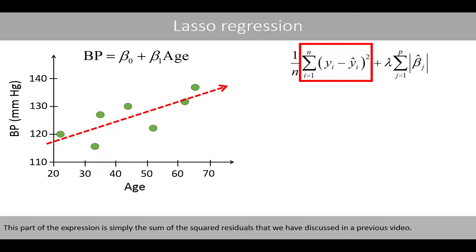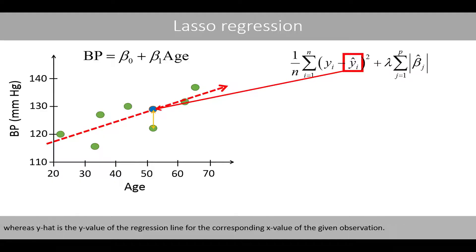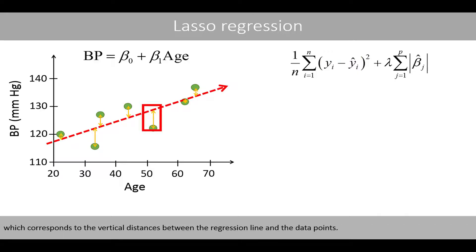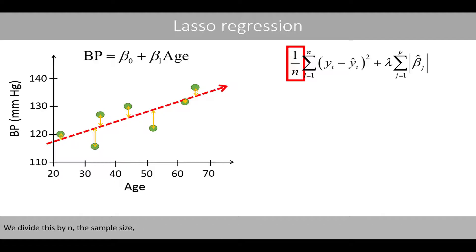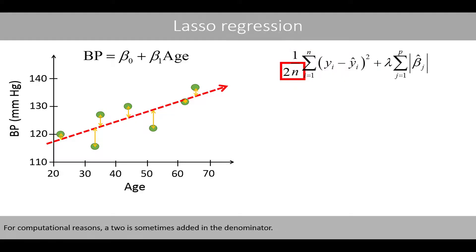This part of the expression is simply the sum of the squared residuals. Remember that y_i is the value of the observations, which in this case is all the blood pressure values of the seven individuals. y-hat is the y value of the regression line for the corresponding x value of the given observation. The difference between the observed and fitted values is called residuals, which corresponds to the vertical distances between the regression line and the data points. In our case, we have seven residuals, and if we sum the squares of these residuals, we get the sum of squared errors. We divide this by n, the sample size, to get the mean sum of squared errors, because it is then easier to compare models based on different sample sizes. For computational reasons, a 2 is sometimes added in the denominator.